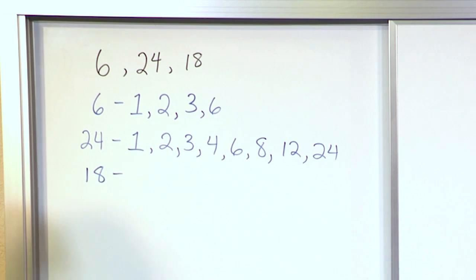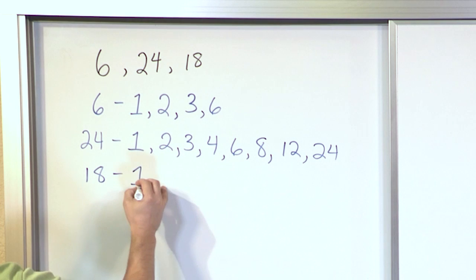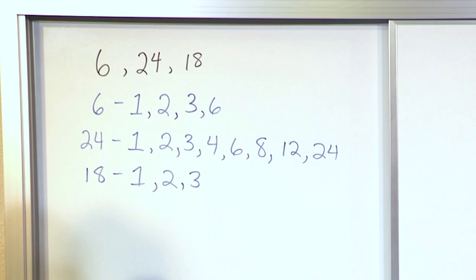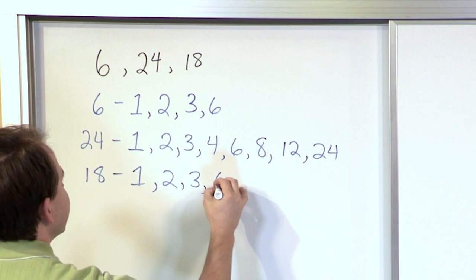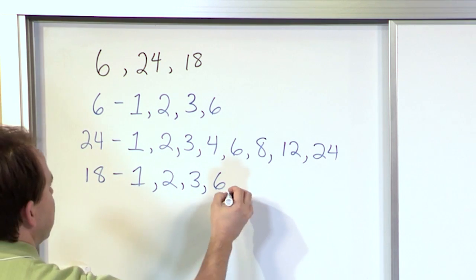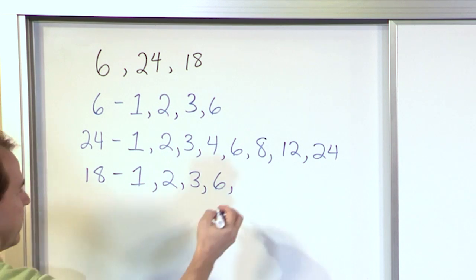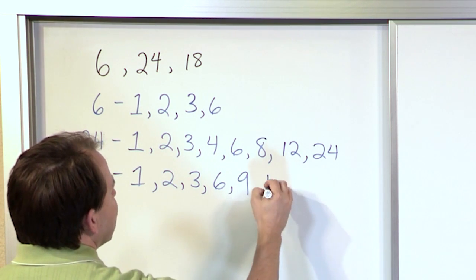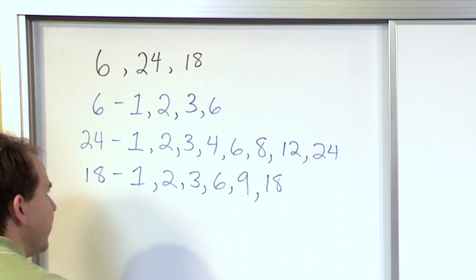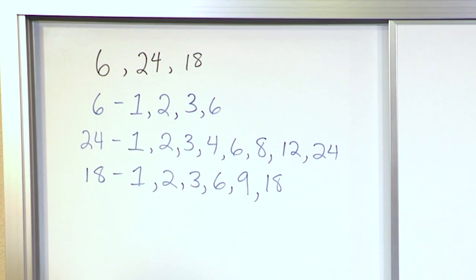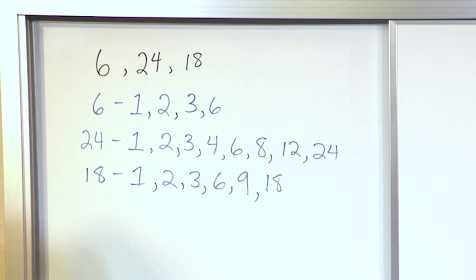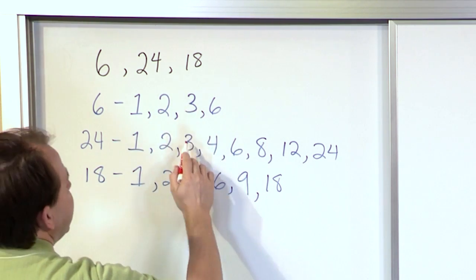Now let's look at the number 18. The number 1 is a factor. The number 2 is a factor because 2 times 9 is 18. The number 3 is a factor because 3 times 6 is 18. 4 and 5 are not factors because they don't go in evenly. But the number 6 is a factor because 6 times 3 is 18. 7 and 8 you can skip. But number 9 is a factor because 9 times 2 is 18. And then the last factor you find is the number 18 itself.